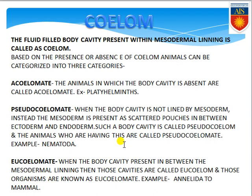The last category is eucoelomate — organisms having the true coelom. The body cavity is properly filled with body fluid and surrounded by mesodermal lining. These cavities are known as eucoelom. Starting from Annelida up to mammals, all organisms contain the coelom lined by mesodermal lining, and they are known as eucoelomates.